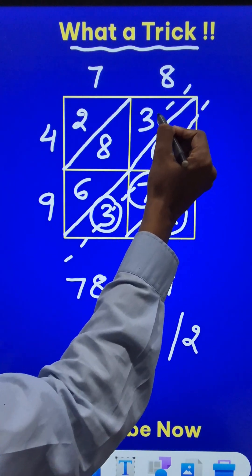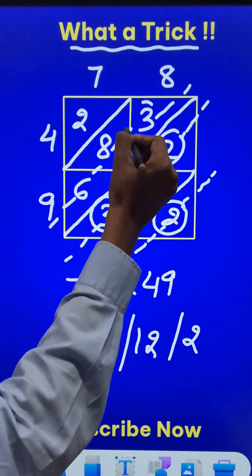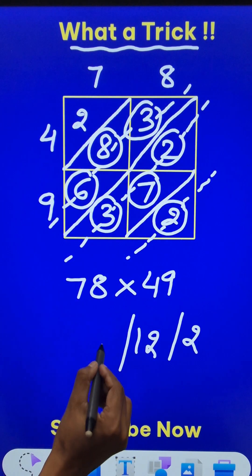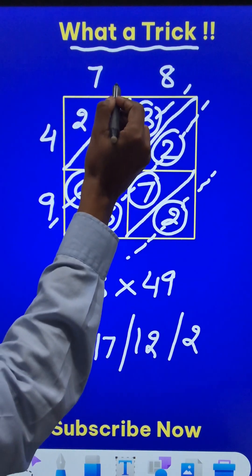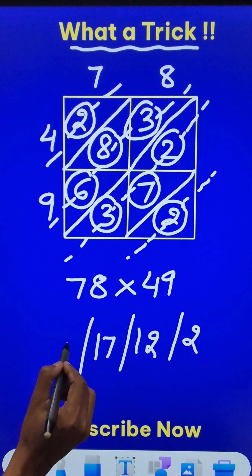And then go across here like this. You get 3 plus 8, 11 plus 6, 17. Write a 17. And finally, the last diagonal which shows 2. Write a 2.